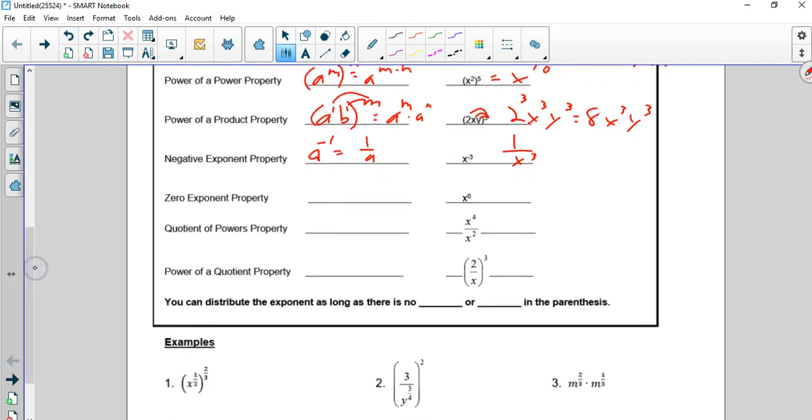Zero exponent rule. Anything to the zero power is 1.